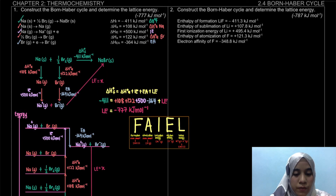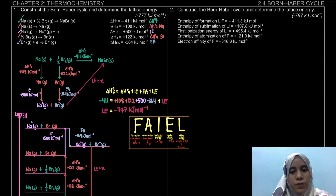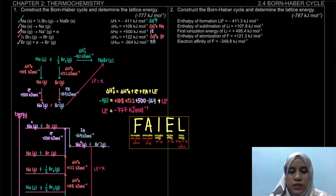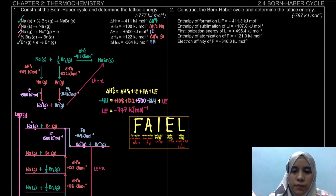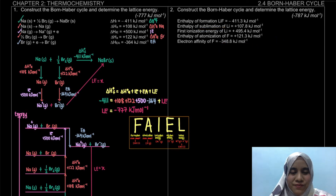For the energy level method, certain questions show the diagram and ask for a specific enthalpy between two levels — you just identify the difference. For example two, you can try it yourself; the difference is that the equations are not given to you, so you have to write them down. Also remember: enthalpy of sublimation is the same as enthalpy of atomization. That's it for this video.